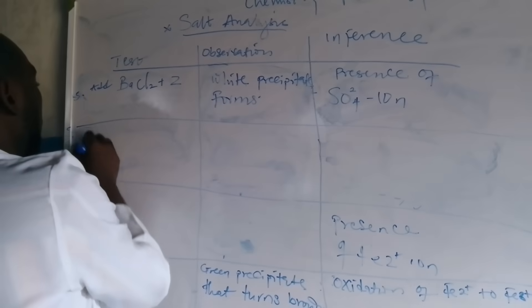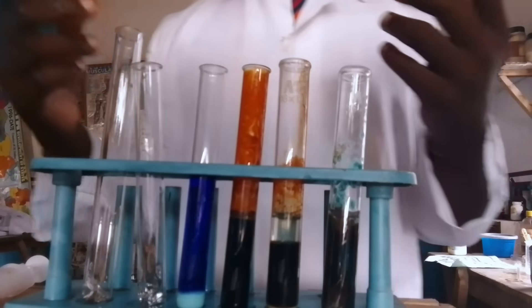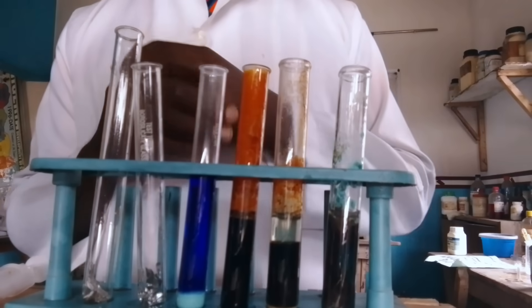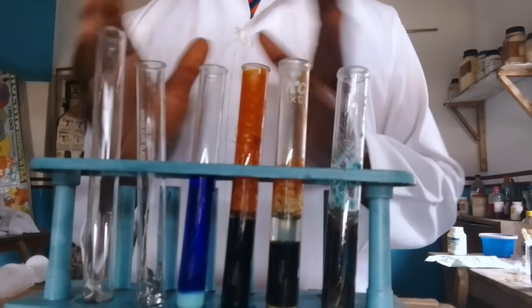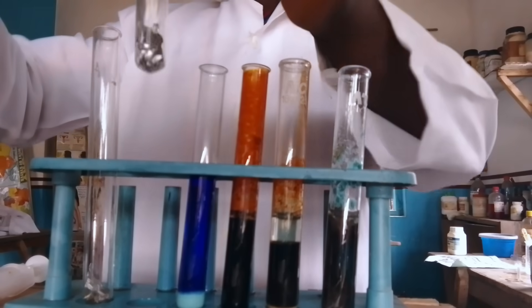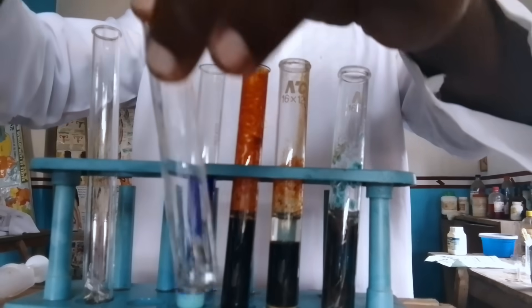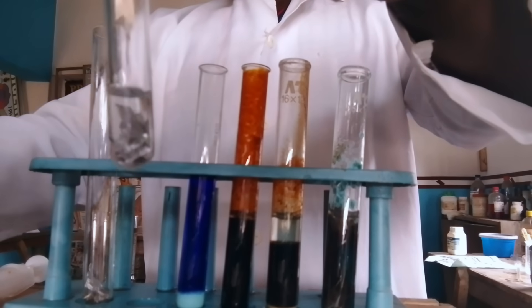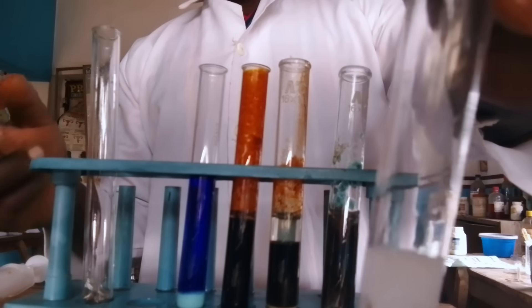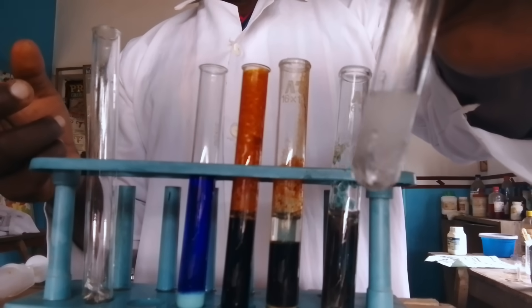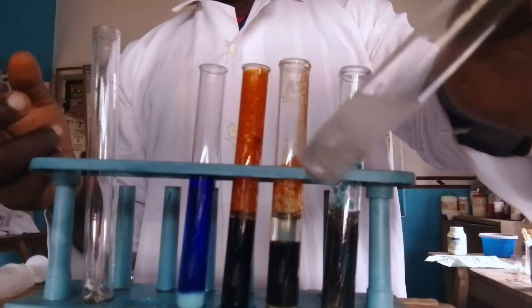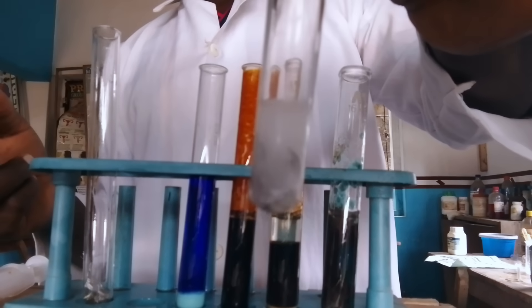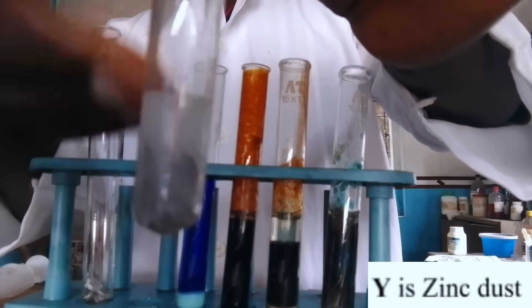This is our zinc powder. We are going to be adding dilute hydrochloric acid to our zinc powder. Now you can see it is producing something like smoke and it is boiling — effervescence is observed, with smoke going up.